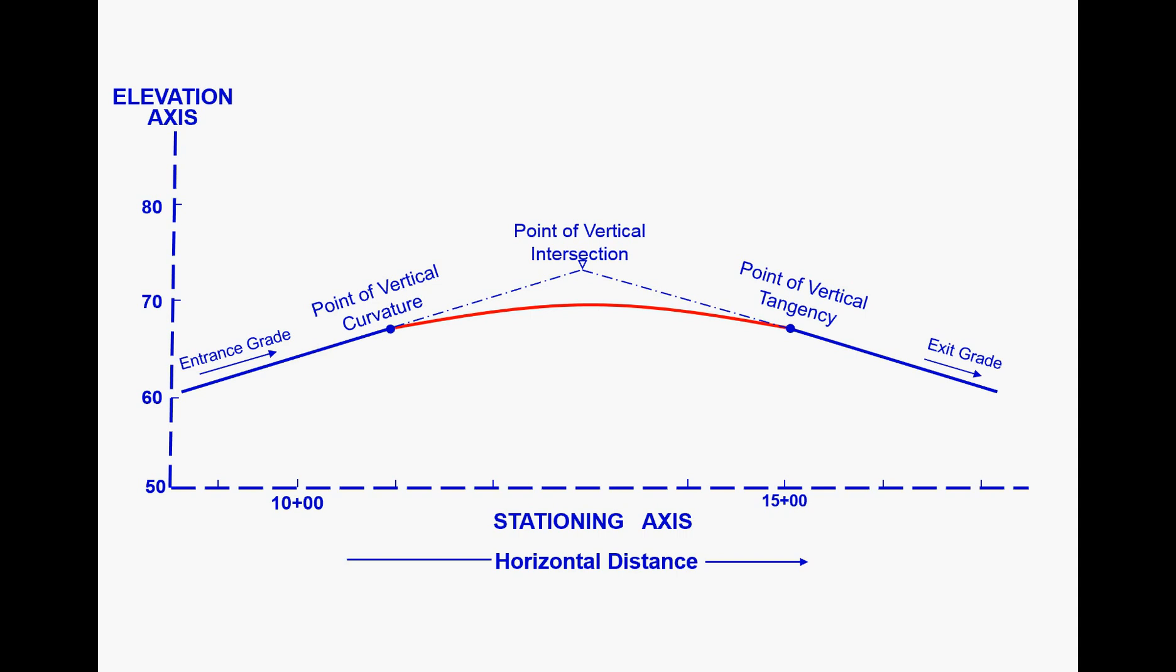The vertical alignment is made up of grades on the tangent sections and vertical curves that tie those tangents together. We'll move along the vertical alignment at the increments specified for the contour lines—that might be one-foot, two-foot, five-foot, or ten-foot intervals depending on the need.